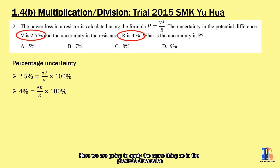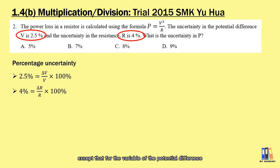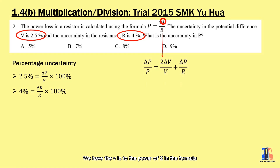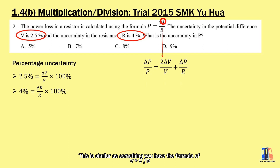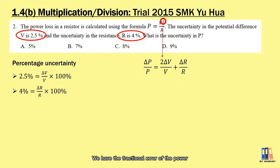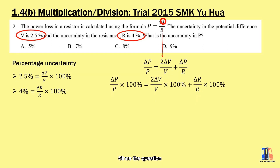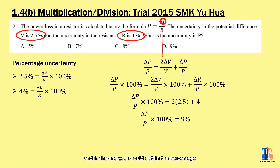We apply the same approach as before, except that the potential difference V is raised to the power of 2 in the formula. So when calculating the uncertainty, we have 2 times the error of the potential difference divided by its value. This is similar to treating V²/R as V × V / R. Therefore, the fractional error of the power equals 2 times the fractional error of the potential difference plus the fractional error of the resistance. Since the question asks only for the percentage uncertainty, substituting the values gives a percentage uncertainty of the power equal to 9%.